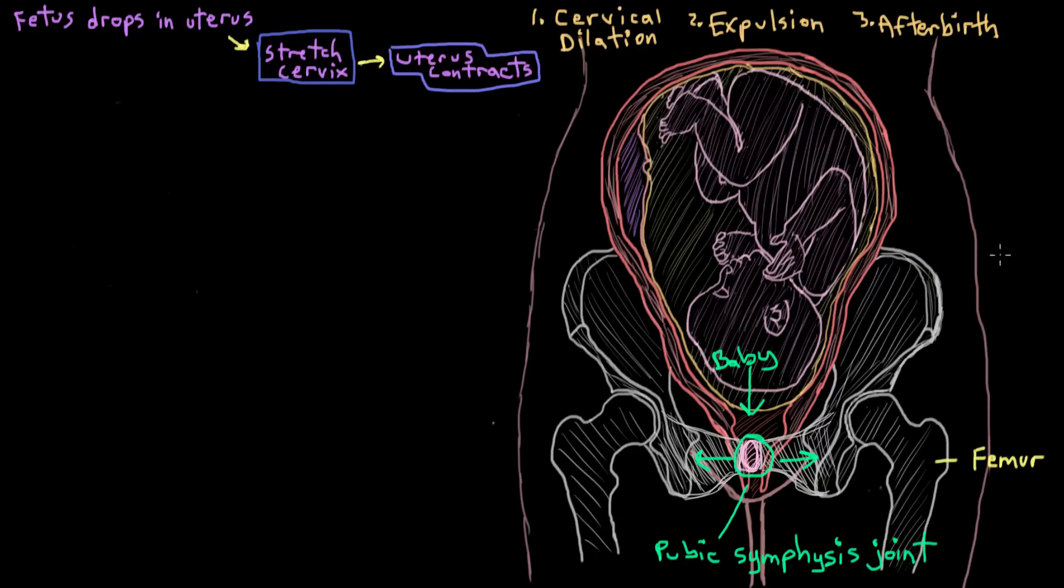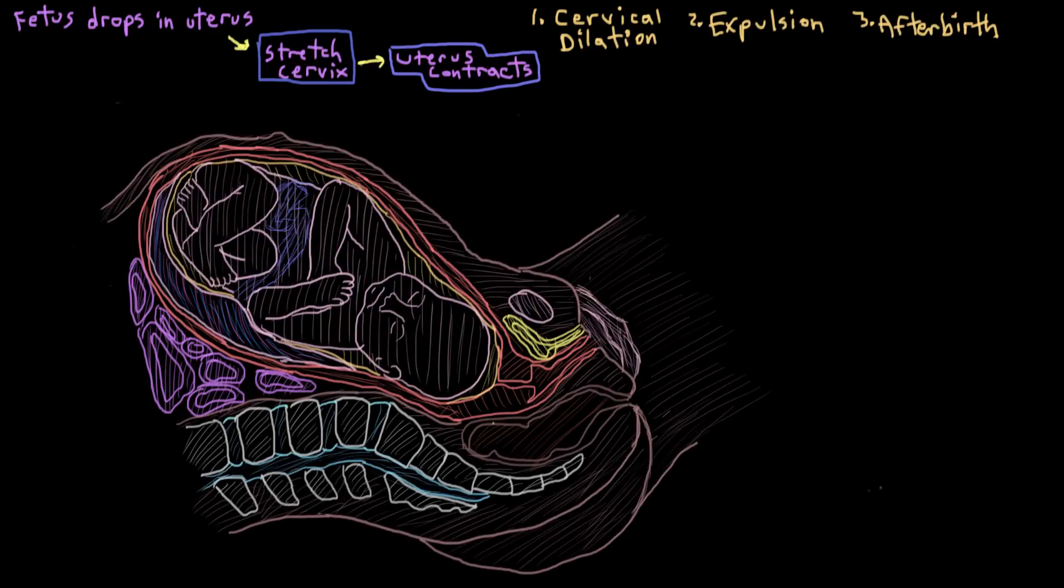So we're in labor now, and this is a sagittal section of mom so that you can see what's going on inside. So we're in the first stage now, the cervical dilation stage. And we can see that this cervix here is probably going to get in the way of the birthing process. And it turns out that for a vaginal birth to take place, the cervix needs to dilate fully, typically to about 10 centimeters in diameter, which is enough so that the baby's head and body can sort of squeeze through. So we need that cervix to dilate.